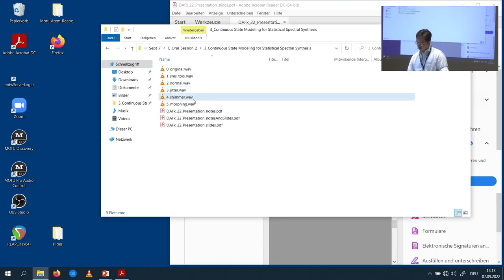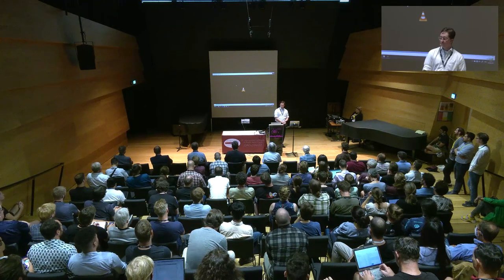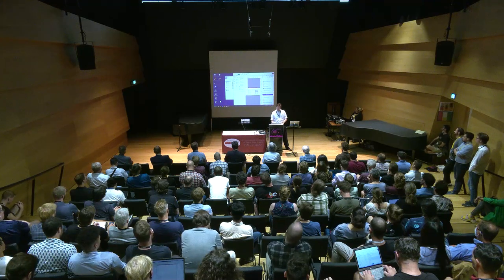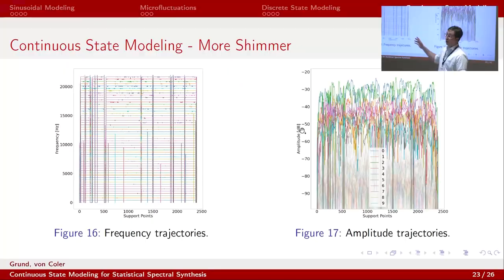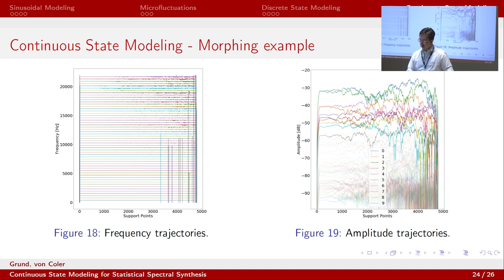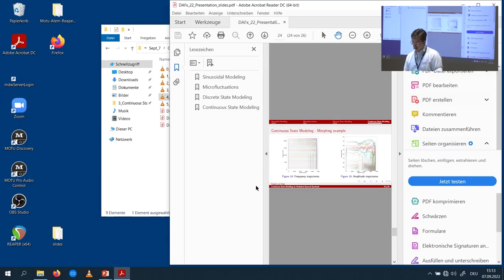In the example with more shimmer, there is really a lot going on in the amplitude trajectories — they are all over the place — which in turn leads to the higher partials' frequency trajectories not being tracked as properly, causing pronounced incision fluctuations in the plot. The last example is a morphing example, where we move from no fluctuations at all to very pronounced fluctuations.